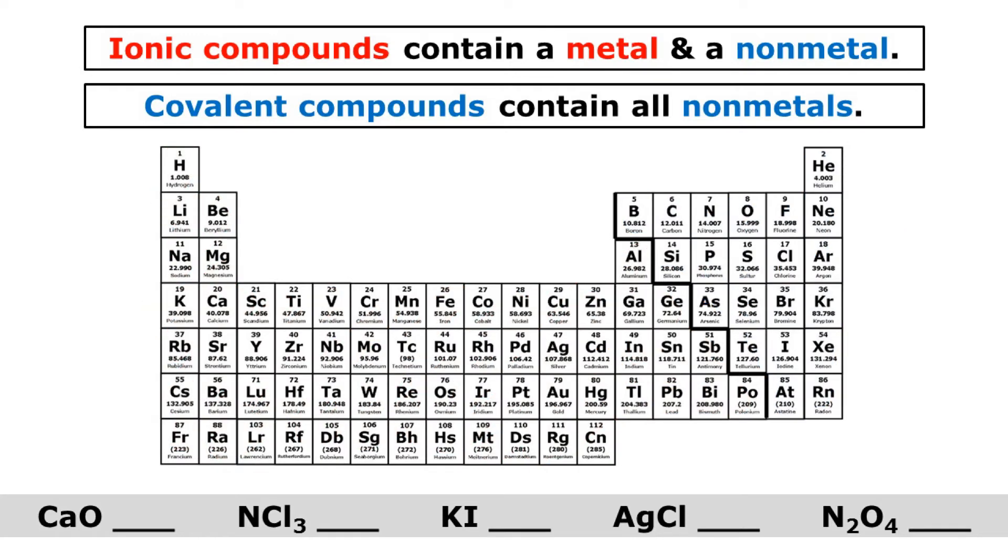And covalent compounds contain all non-metals. So all of the elements in a covalent compound will be found on the right side of that dark jagged line. So let's look at a few examples to make sure you understand.